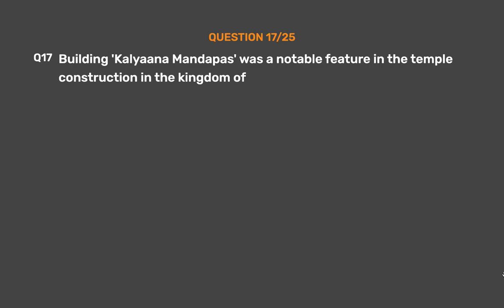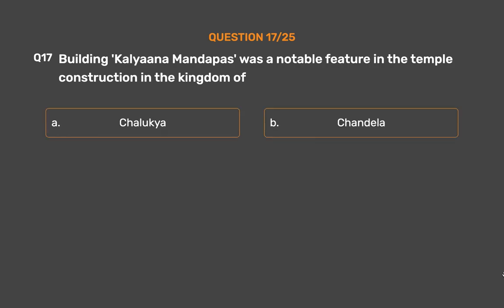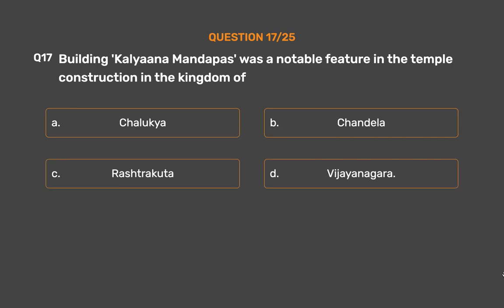Question No. 17: Building Kalyana Mandapas was a notable feature in the temple construction in the kingdom of ___. Option A: Chalukya. Option B: Chandela. Option C: Rashtrakuta. Option D: Vijayanagara.